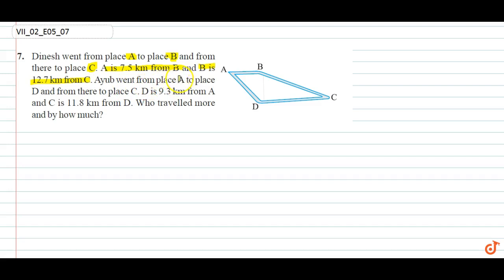Ayub went from place A to place D and from there to place C. D is 9.3 km from A and C is 11.8 km from D.